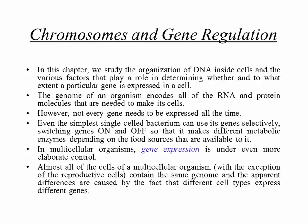Not every gene needs to be expressed all the time. Even the simplest single-cell bacterium can use its genes selectively, switching genes on and off. Gene turning on means it's getting transcribed — the corresponding portion is getting copied into RNA. Off means it's not getting transcribed.